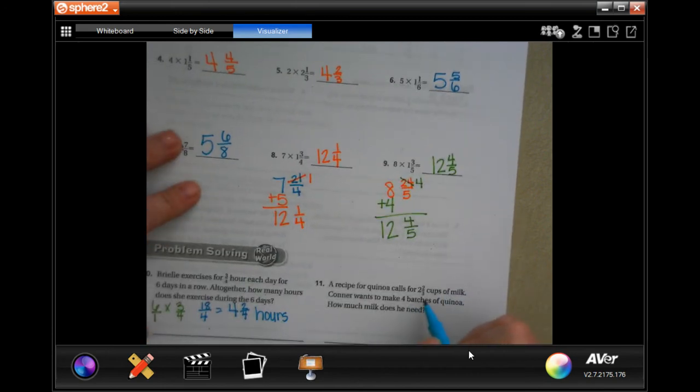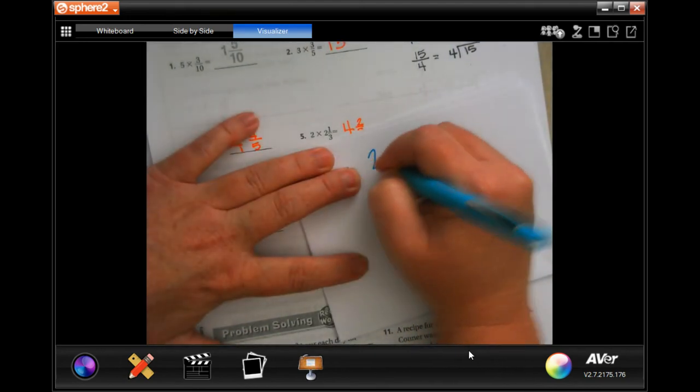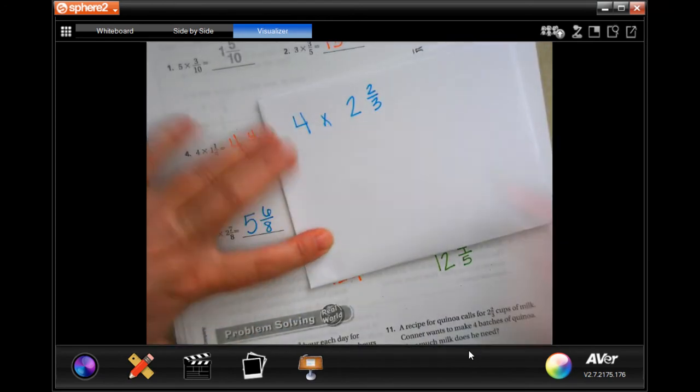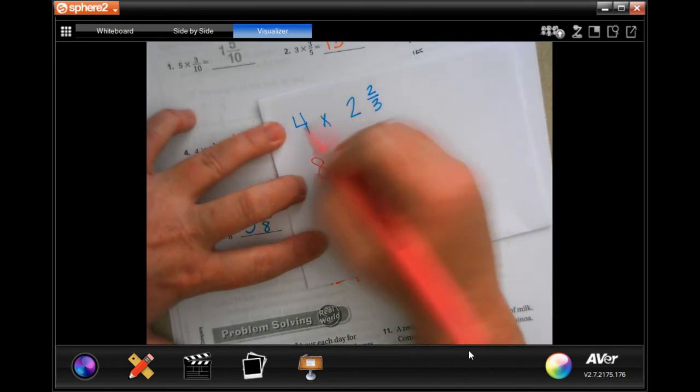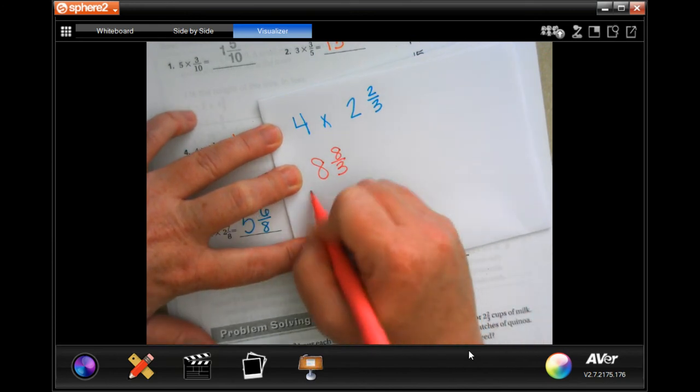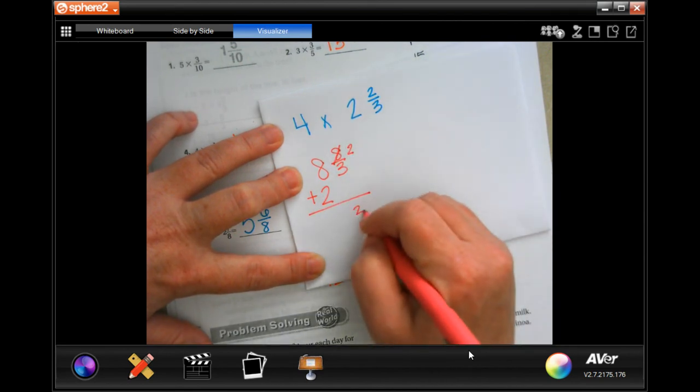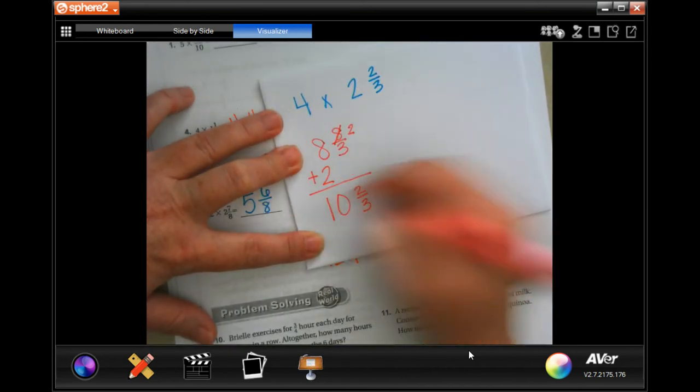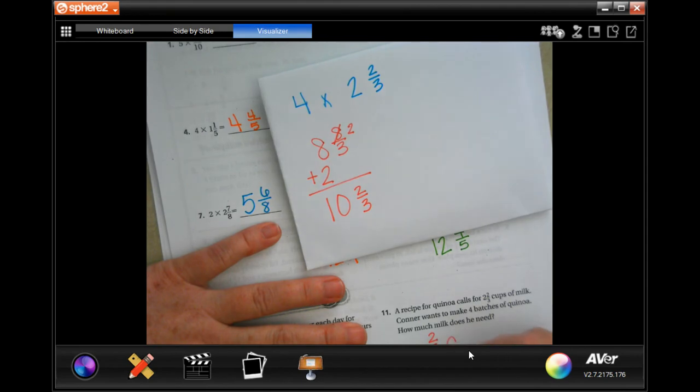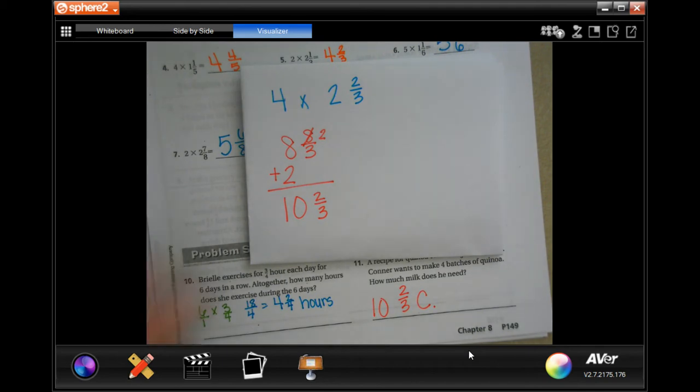All right. A recipe calls for 2 and 2 thirds cups of milk. Connor makes 4 batches. So, let me fix my scrap paper so I've got some room. So I have 4 times 2 and 2 thirds. Same thing, y'all. 4 times 2 is 8. 4 times 2 is 8 again, and then I keep my denominator. 8 is bigger than 3. 3 goes into 8, 2 times, that leaves me with 6. 8 minus 6 is 2. 8 plus 2, 10. 10 and 2 thirds cups. Pause it and write down your work, guys. You need to write it down.